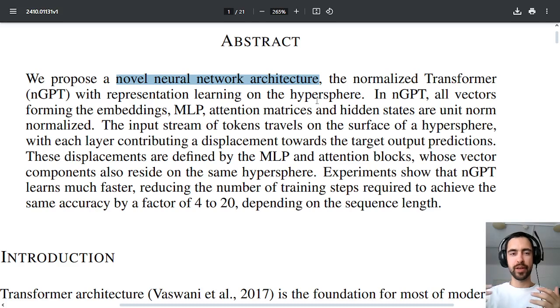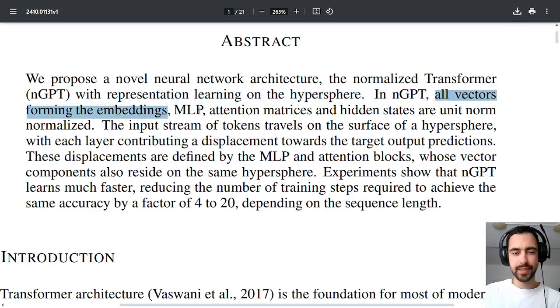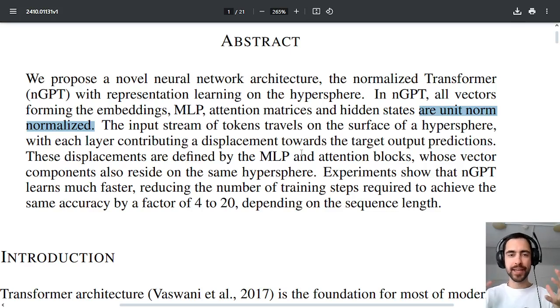which has many more dimensions than just three dimensions of the ball. All vectors forming the embeddings, MLP, attention matrices and hidden states are unit norm normalized. So every single vector and matrix goes from zero to the surface of the ball, or I should say hypersphere.